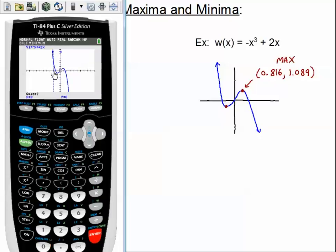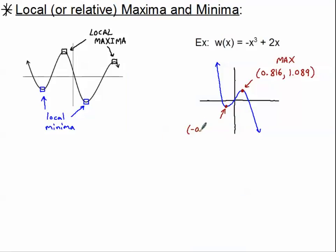I've told the calculator that my minimum is somewhere between negative two and zero. It asks for the guess, so I'm just going to press enter. And we get our ordered pair: negative 0.816, comma, negative 1.089. So this was (-0.816, -1.089). And that's my minima. These are exact opposite points, and you might have assumed that because it does look like a symmetrical graph. That means that we must have an odd graph because we have an ordered pair and the exact opposite of the ordered pair on the graph. That's how you use your calculator to find local maxima and local minima.